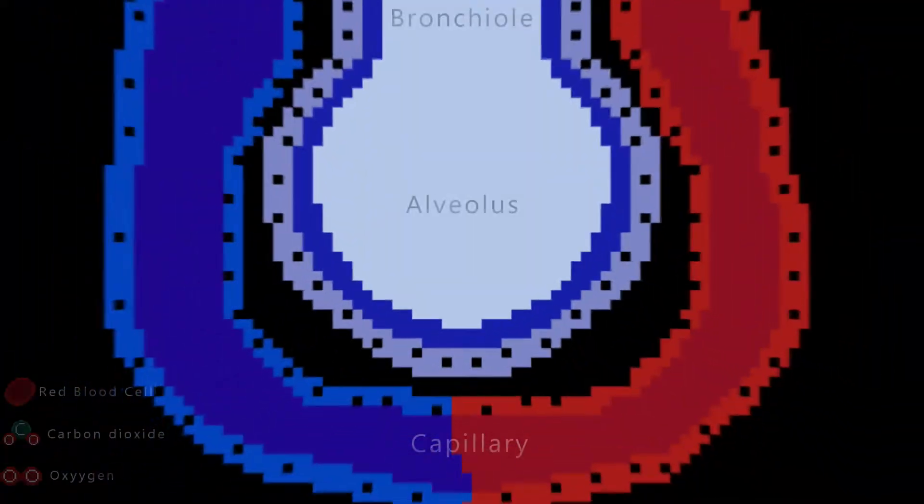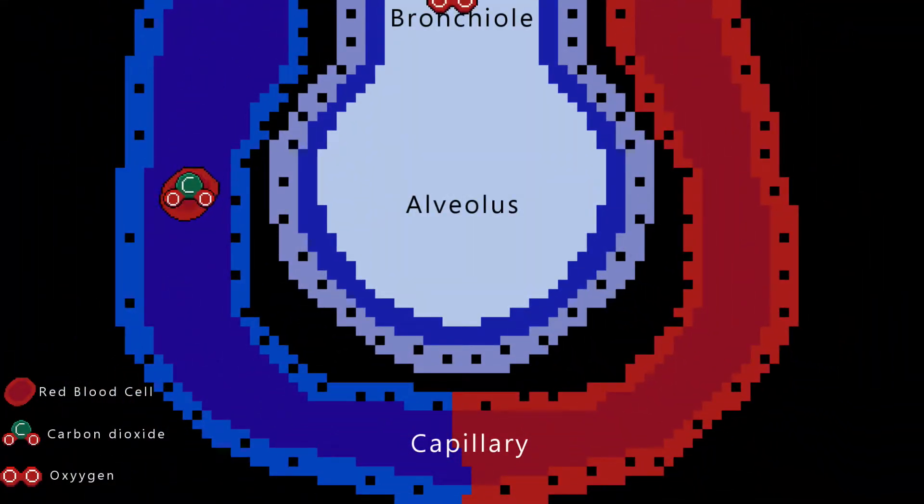The alveoli are the site of gas exchange between the atmosphere and the blood. Deoxygenated blood flows all around the alveoli so that oxygen can be picked up and carbon dioxide can be removed via diffusion.